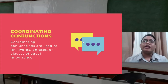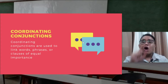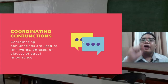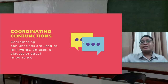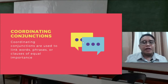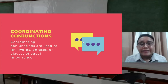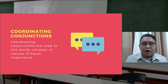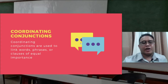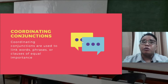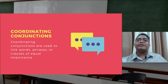Coordinating conjunctions are used to link words, phrases, or clauses of equal importance. That's the key word — equal importance — meaning they carry the same weight. The example for coordinating conjunctions, which you may have learned before, uses the mnemonic FANBOYS.